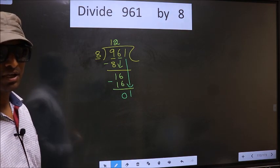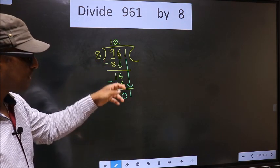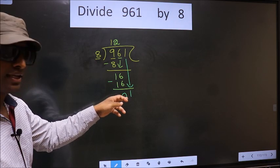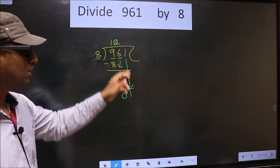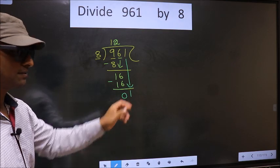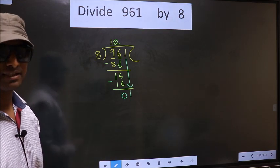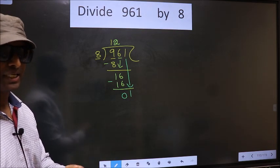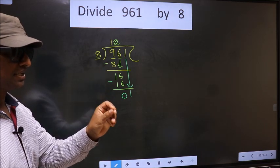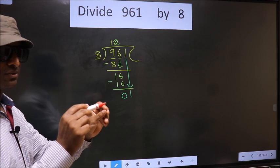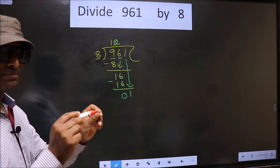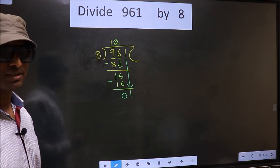So what many do is they put a dot and take 0 here, which is wrong. Just now you brought the number down, and in the same step, you want to put a dot and take 0 here, which is wrong. I repeat, bringing the number down and putting a dot and taking 0, both at the same step, you are not supposed to do.